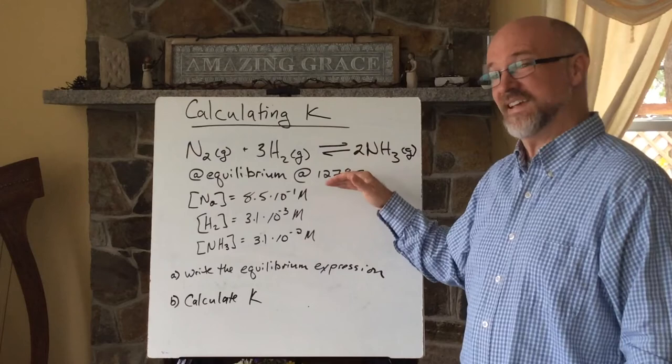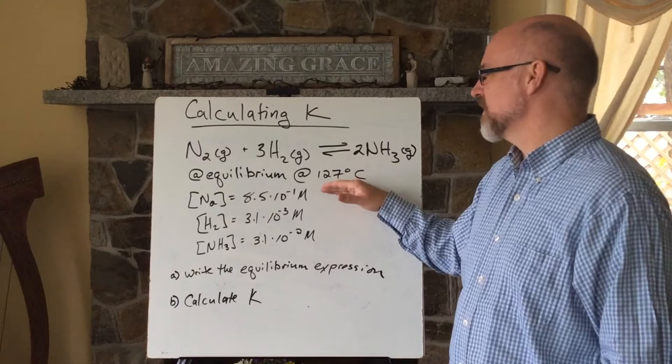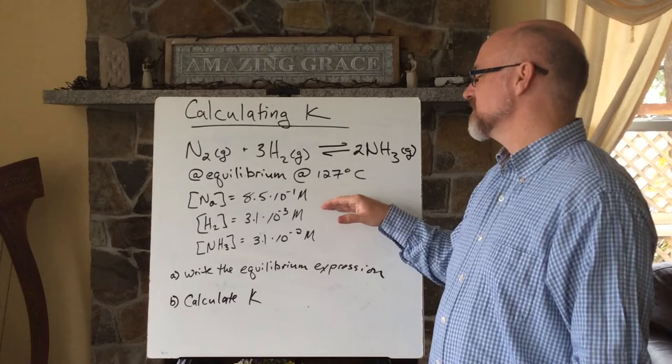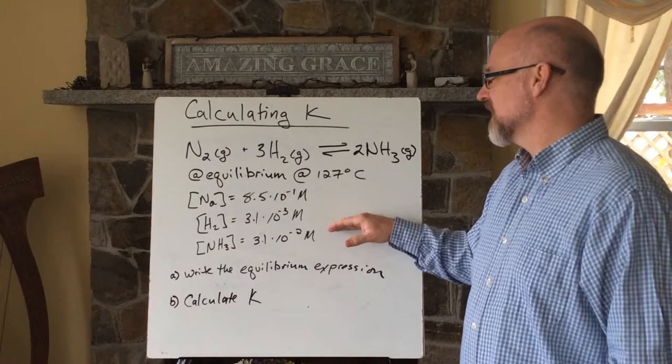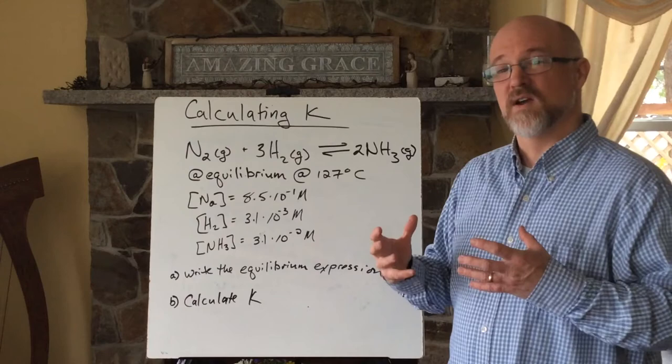Here are our concentrations. The nitrogen is at 8.5 times 10 to the negative 1 molar. Hydrogen is at 3.1 times 10 to the negative 3rd molar. And the ammonia that's being produced is at a concentration of 3.1 times 10 to the negative 2 molar. So that means this is where this reaction is at equilibrium.